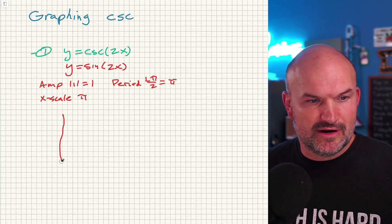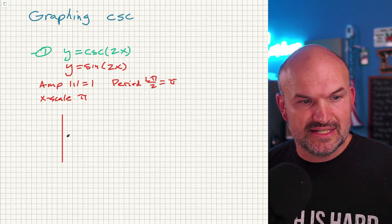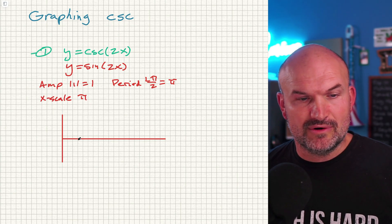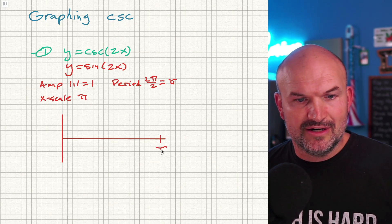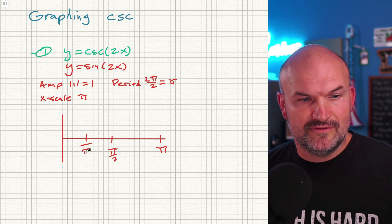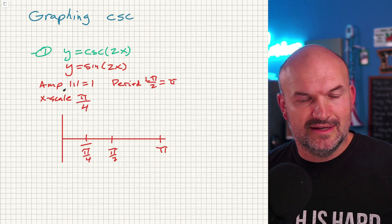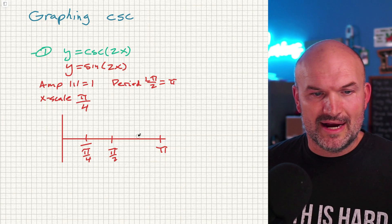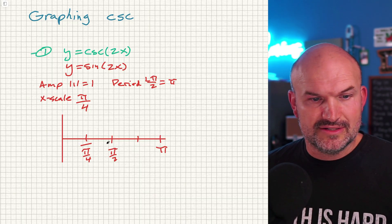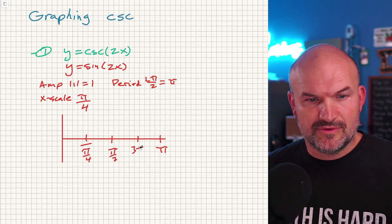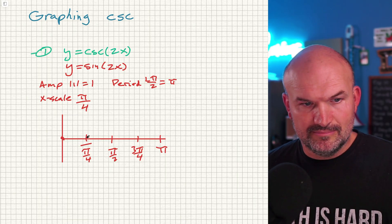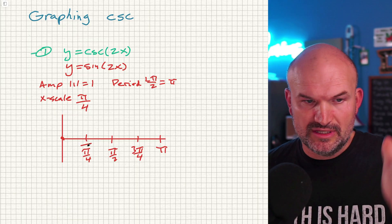I'm going to create my x and y axes. I know a full period of sine completes at pi, so I'll mark pi on the axis, with pi halves at the halfway point. The x scale is pi over four, so I'll have five important points. Starting at zero, the tick marks are at pi over four, pi over two, three pi over four, and pi — each separated by pi over four.